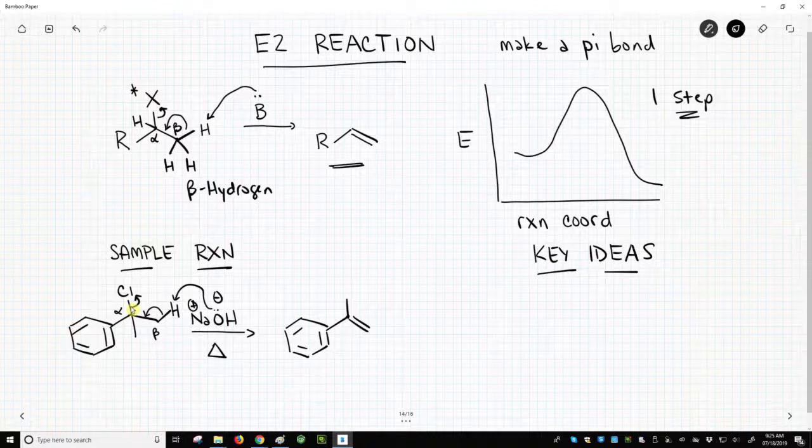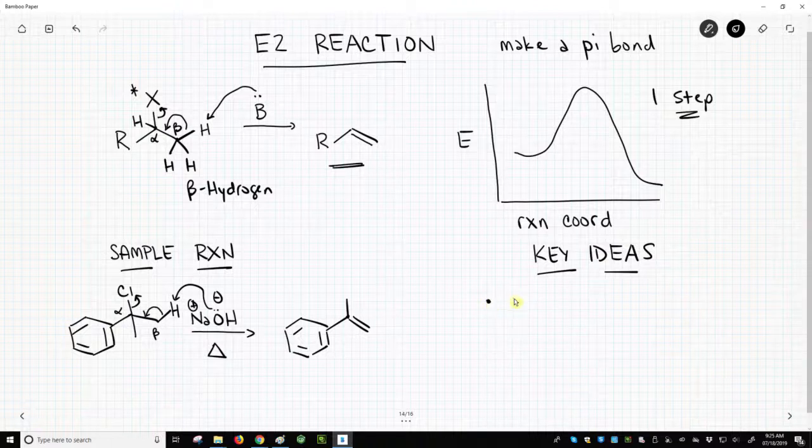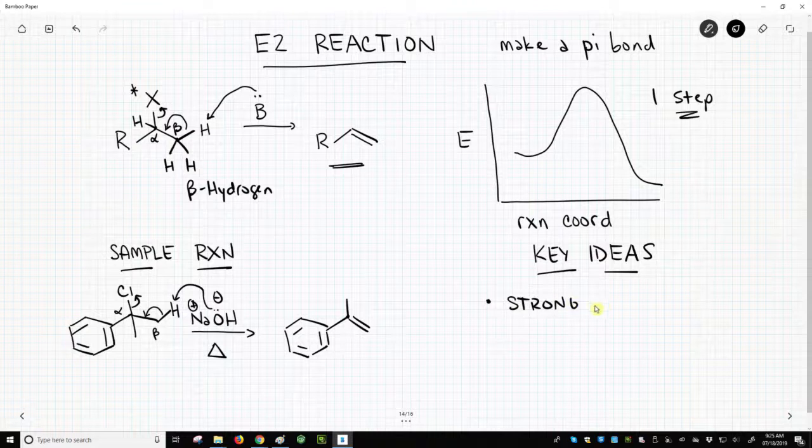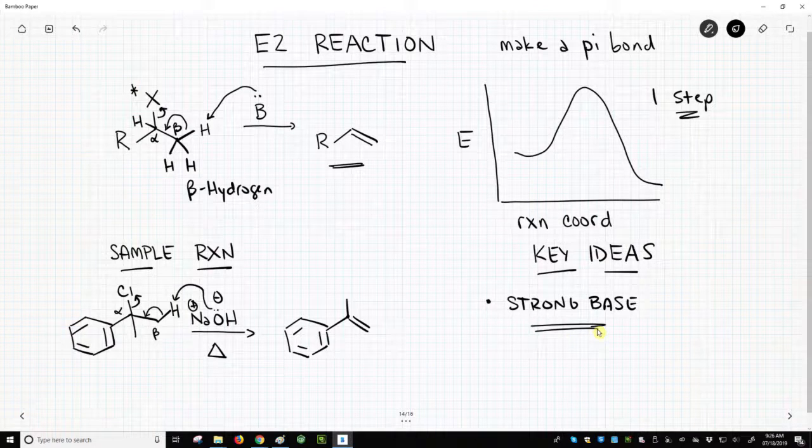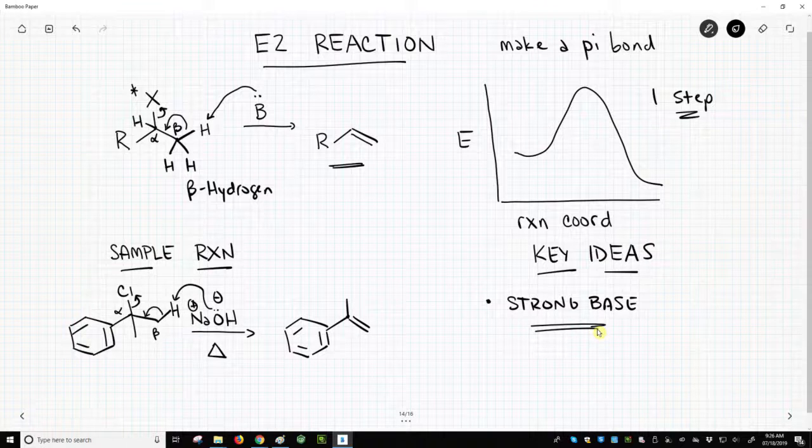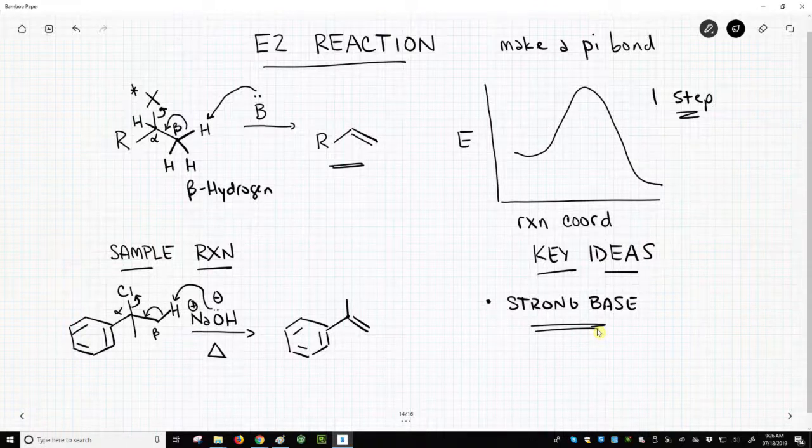Now what are the key ideas? I'd say really there's one key idea in an E2 reaction. It's not the only idea, but it's the key idea. We need a strong base. If you want to do an E2 reaction, you must have a strong base, and that's the key takeaway for an E2 reaction. So the E2 reaction is an elimination that occurs in a single step and involves a reaction of a strong base with an alkyl halide.